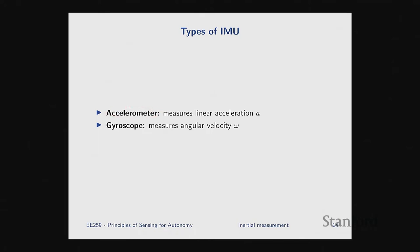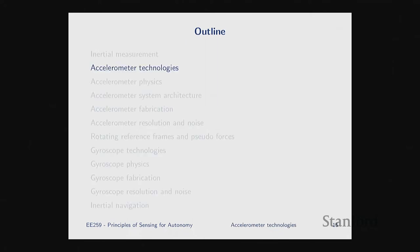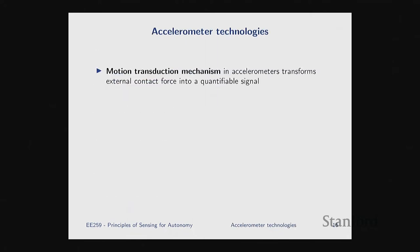There are two distinct types of inertial sensors we'll talk about. First are accelerometers, which measure linear acceleration a. Then there are gyroscopes, which measure angular velocity omega. These operate on different but closely related physics principles. Today we'll cover accelerometers; next time we'll cover gyroscopes.